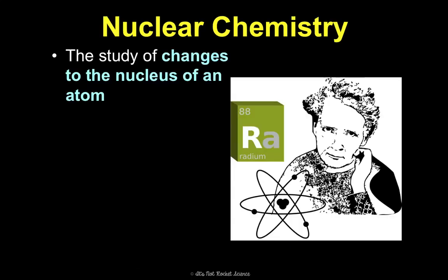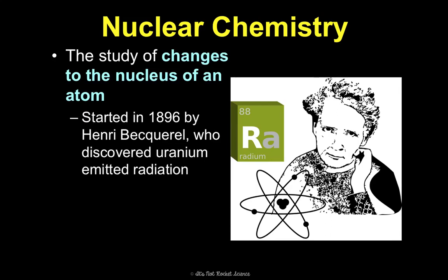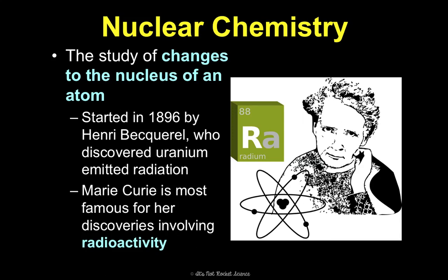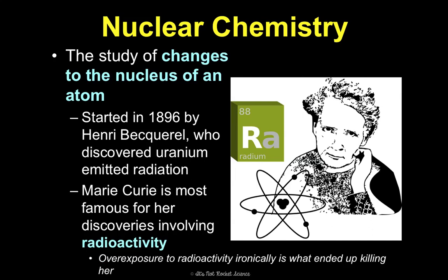So what is nuclear chemistry? It is the study of changes to the nucleus of an atom. This science came to be in 1896 by a man — I'm not even going to attempt to say his name; I'll call him Henry, but it's probably Henri or something fancier. He discovered uranium emitted something called radiation. Most of you have probably heard of Marie Curie, who is most famous for her discoveries involving radioactivity. Ironically, she died from overexposure to the radioactivity she was studying because at the time they didn't realize how serious it was.